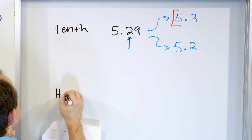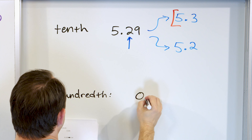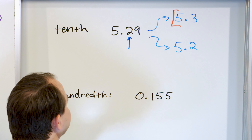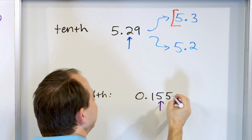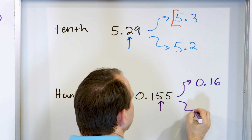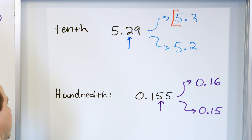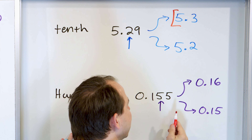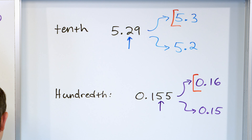Here is our last problem: round zero point one five five to the nearest hundredth. Here's the tenths, here's the hundredths — put a little arrow there. If we round up it goes to zero point one six, or it stays down at zero point one five. We look next door and have a five. Remember, five is a tiebreaker — if you see a five next door, you still round up to zero point one six.